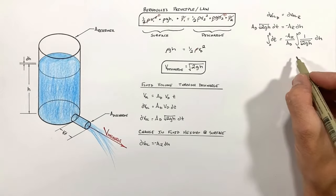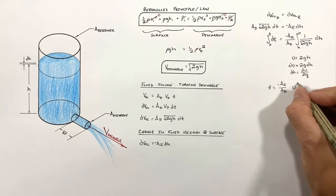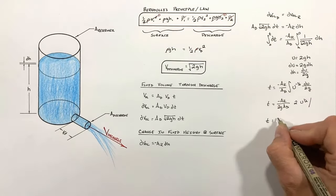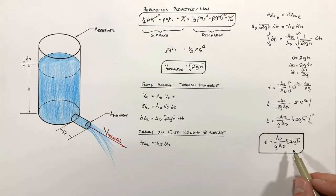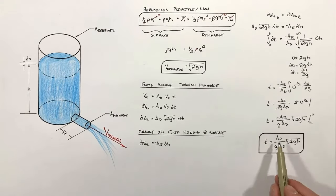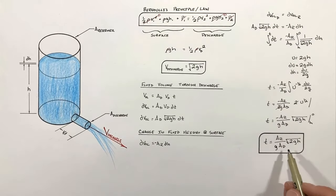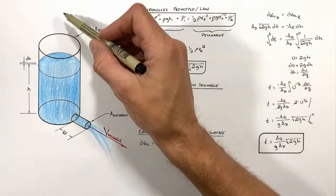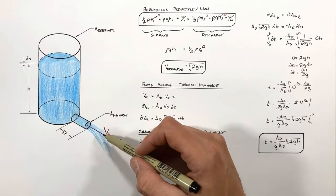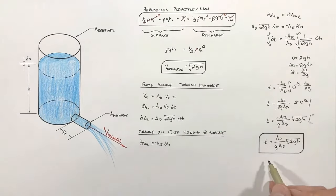You can do the calculus behind this however you want — what I'm going to do is a U substitution. And we're left with an expression for the time to drain the entire tank. Unsurprisingly, the larger the reservoir, the longer it will take to drain, and the smaller the discharge hole, the longer it will take to drain. What's not obvious, however, is that if we were to double the height of fluid within the tank, it would not take twice as long to drain. That's because the deeper the fluid in the tank, the faster the fluid will drain, which means doubling the fluid depth increases — but does not double — the total drain time. And that's all for now.